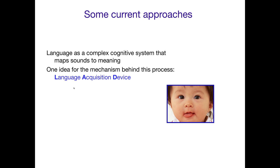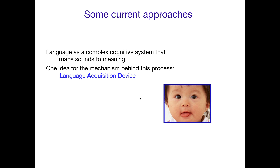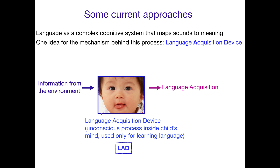One idea for the mechanism behind this process is something called the Language Acquisition Device, or LAD for short. The idea is very simple: there's information from the environment, and the Language Acquisition Device processes that information. It's an unconscious process going on inside a child's mind, used only for acquiring language — hence the name Language Acquisition Device. And out of that comes successful language acquisition — it's a little black box in there, chugging away, focused on language acquisition.